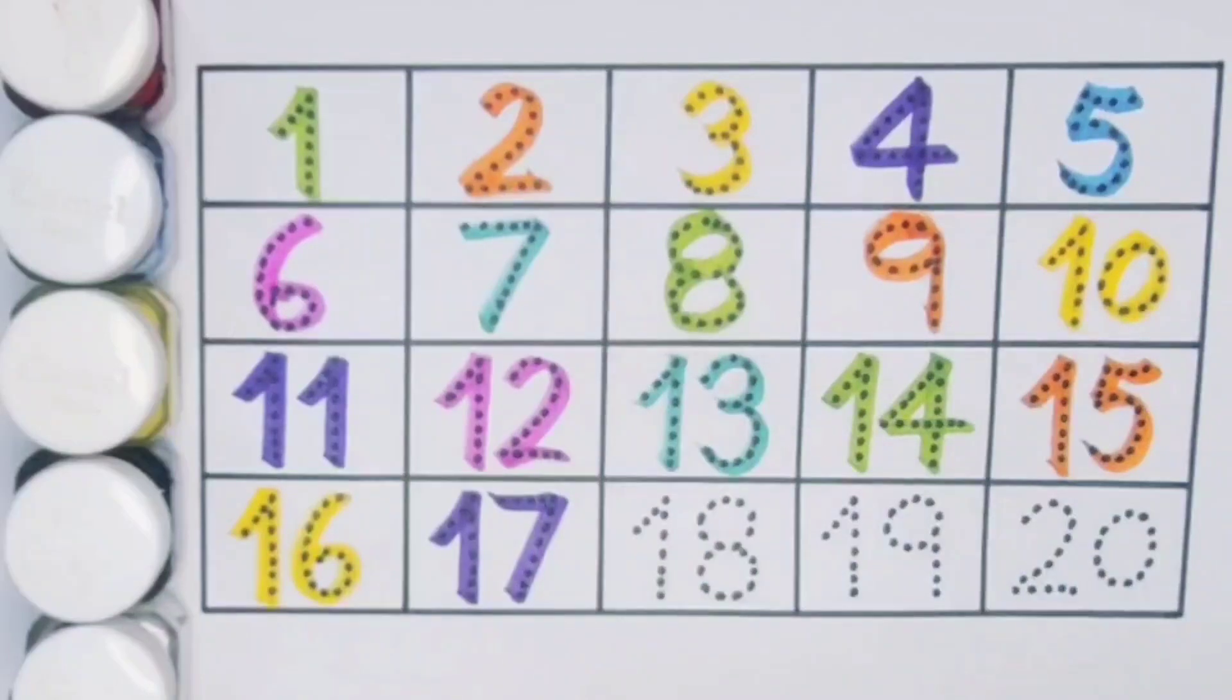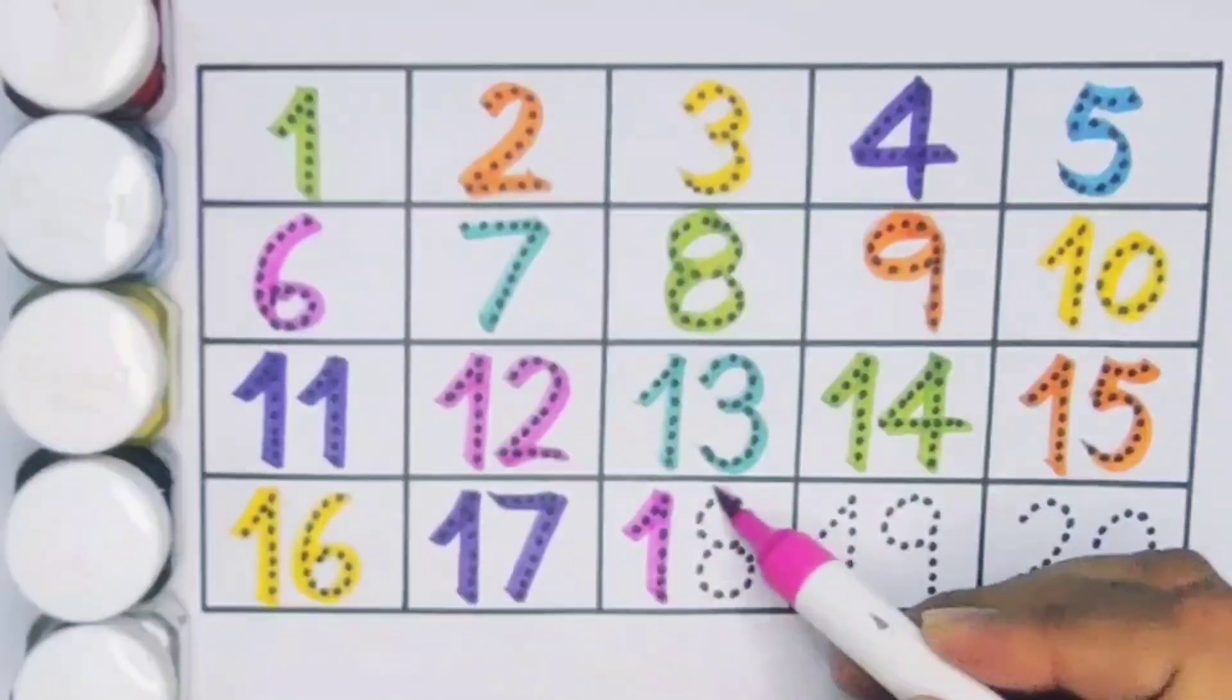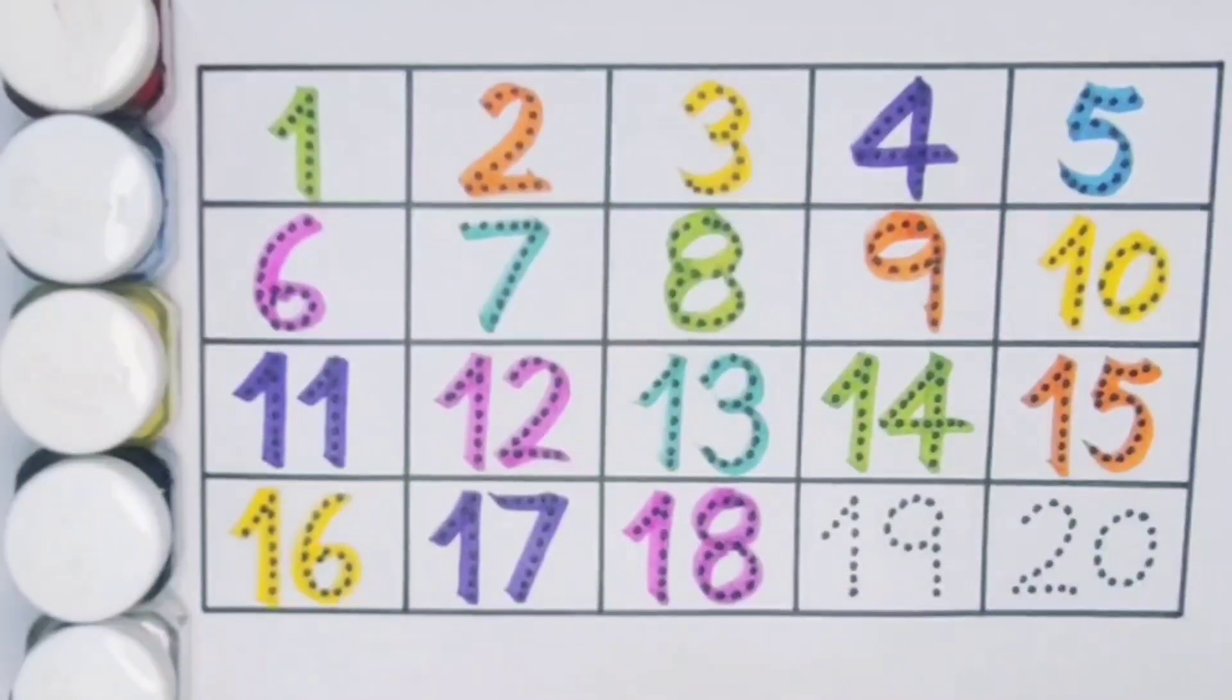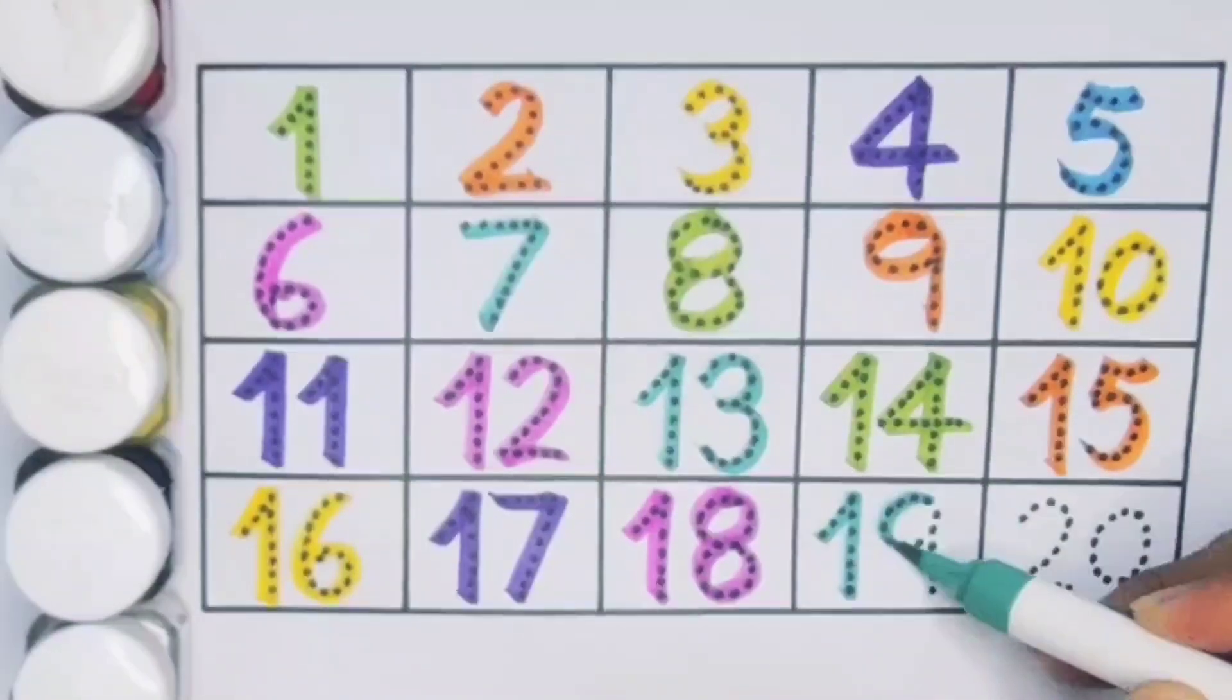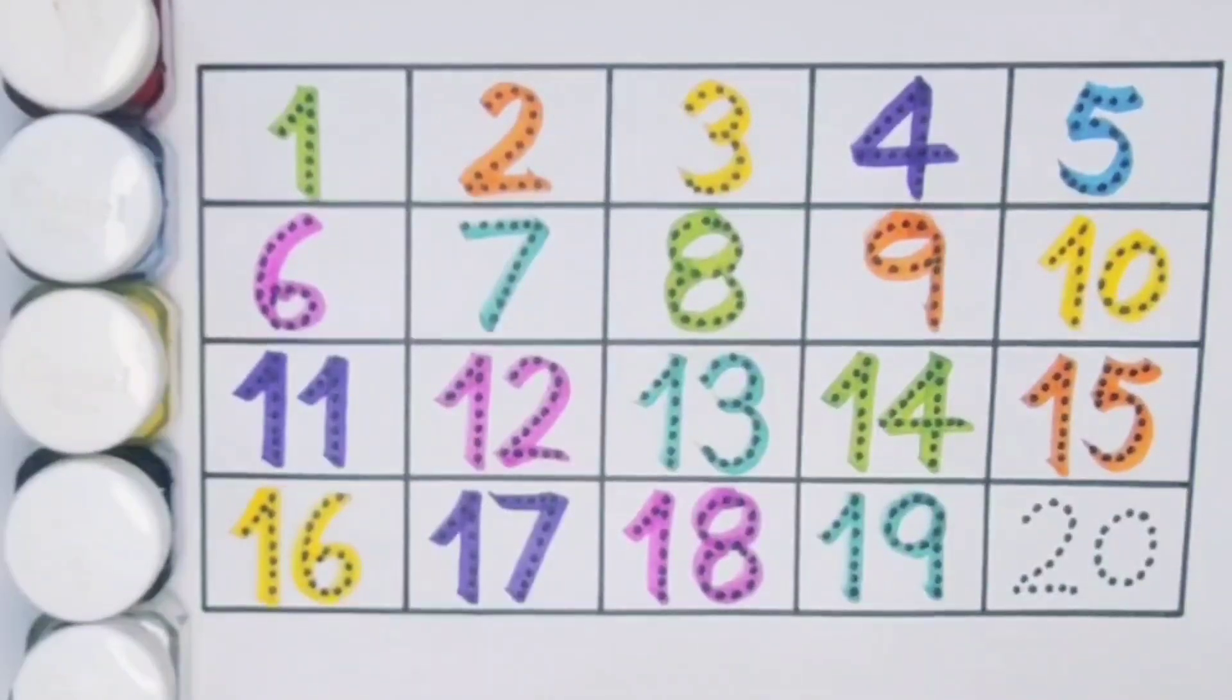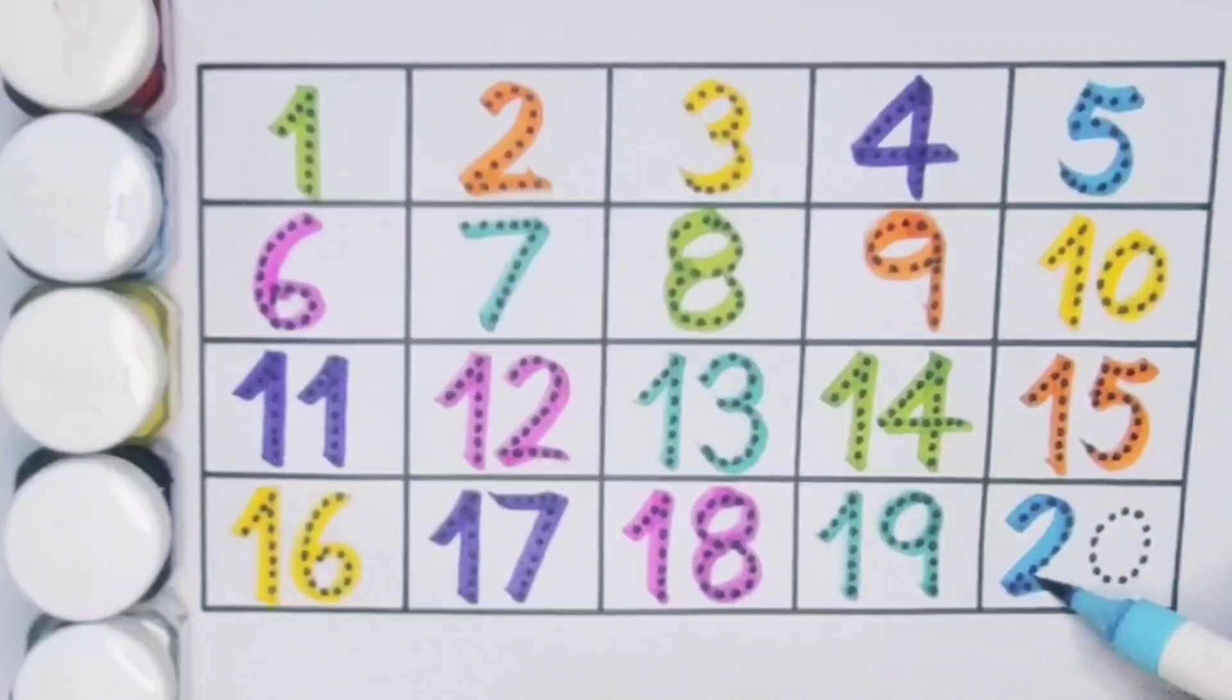Next case eighteen, one eight, eighteen, number eighteen. Next case nineteen, one nine, nineteen, number nineteen. Next case twenty, two zero, twenty, number twenty.